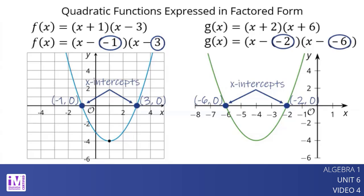The connection between the factored form and the x-intercepts of the graph tells us about the zeros of the function. Recall that the zeros are the input values that produce an output of 0. Let's look closer at the connection between the zeros of f of x and the x-intercepts of its graph.